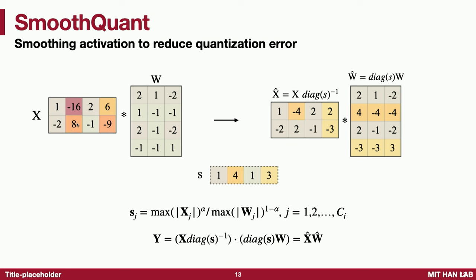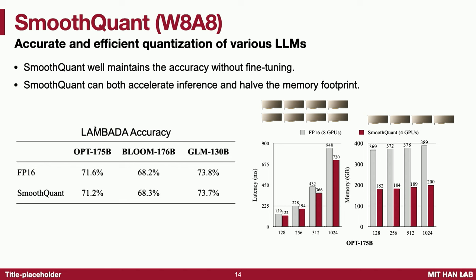Here is an example: activation multiplied with the weight, with two outlier channels. We scale them in a mathematically equivalent manner — 16 × 1 equals 4 × 4 — using a scaling factor of 4 to scale the weight and activations accordingly, shrinking down the activation and bumping up the weight. The result is mathematically equal and you no longer have big outlier channels. This maintains accuracy for models up to 175 billion parameters, reducing the serving cost from 8 GPUs to 4 GPUs, with shorter latency due to reduced communication overhead and memory consumption reduced by half.